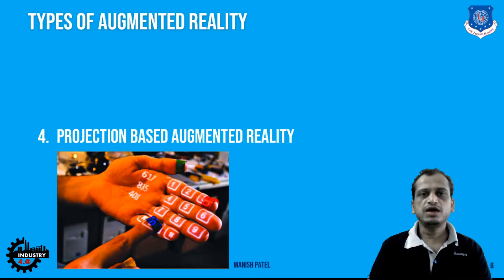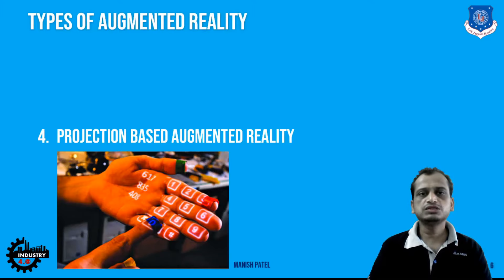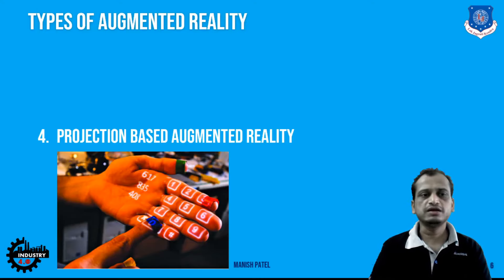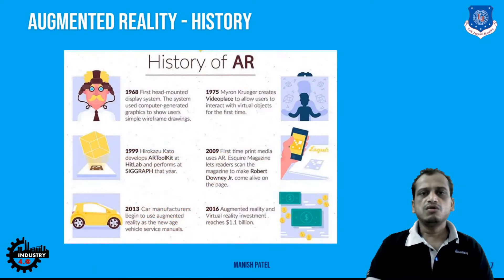Then we have projection-based AR. For example, a dialer image from a mobile is projected onto the hand, and you can literally dial numbers using augmented reality and call another person. This is projection-based augmented reality.